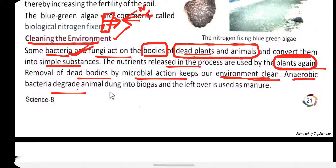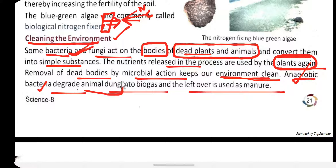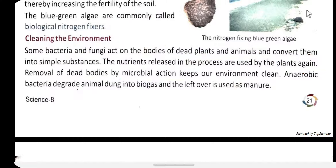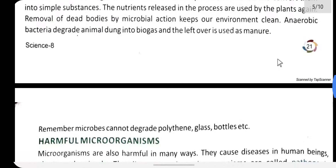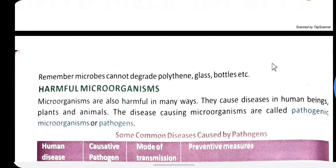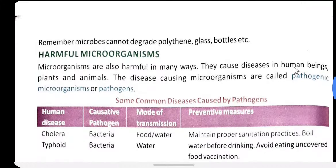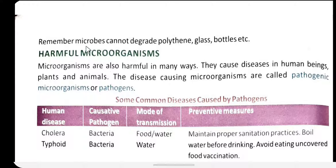Anaerobic bacteria degrade animal dung into biogas, and the leftover is used as manure — natural or organic fertilizer. So we get two benefits: biogas for energy, and manure for the soil.